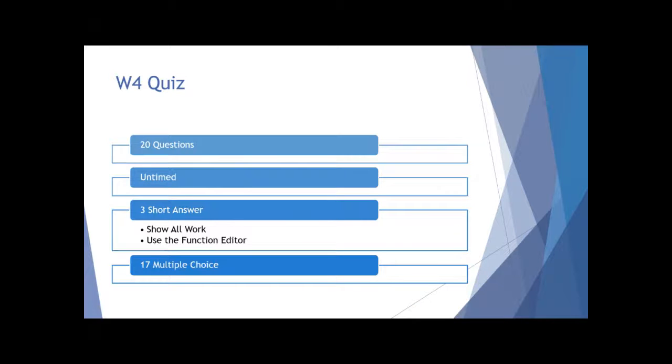This particular quiz is 20 questions and it's untimed. That means you can start it as you work through the material and work on it a little bit at a time based on what you know. There are only three short answer questions for this particular quiz. Make sure you're showing all of your work and using the function editor. There are 17 multiple choice questions. It's going to be a nice break from the exam you had last week.